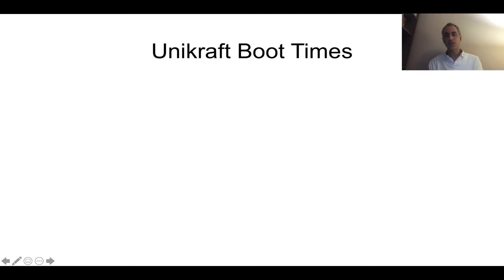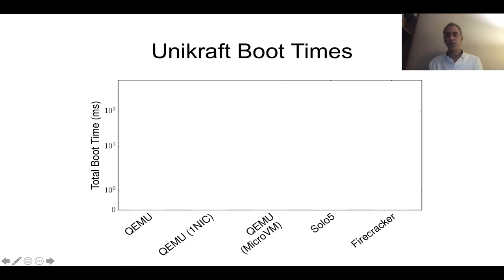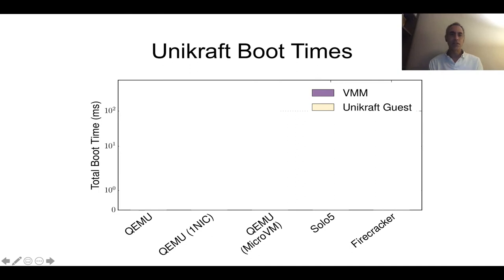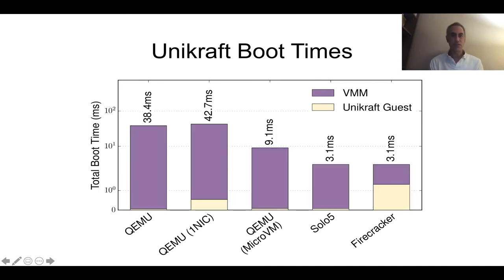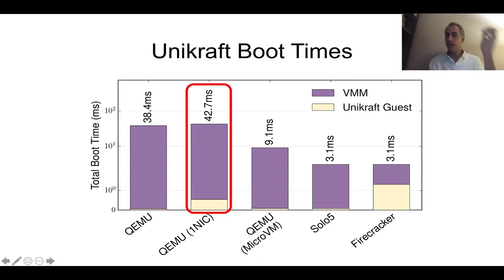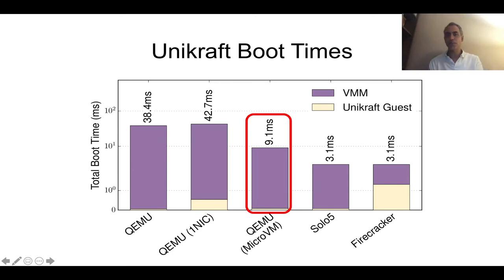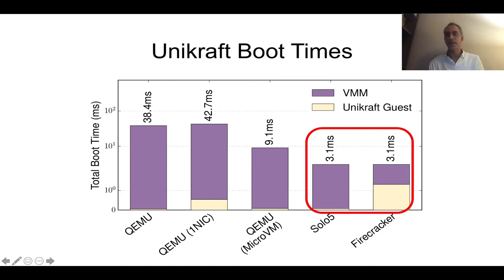For Unicraft boot times, we support different VMMs: QEMU, QEMU with a network interface, QEMU Micro VM, and then a few more specialized VMMs such as Solo5 and Firecracker from Amazon, and we measure the total boot time. We also split the measurement between the actual VMM and how long the Unicraft guest takes to boot. The worst case with QEMU is about 40 milliseconds, where most of the time is spent on the VMM. With Micro VM, which is a faster version of QEMU, it goes significantly down to 9 milliseconds. And the fastest times are with Solo5 and Firecracker, just a few milliseconds.